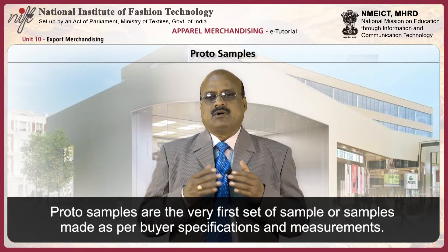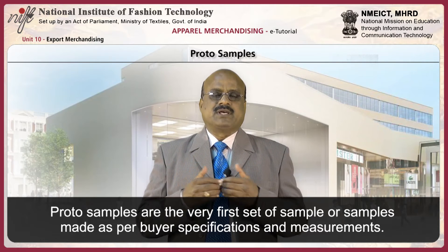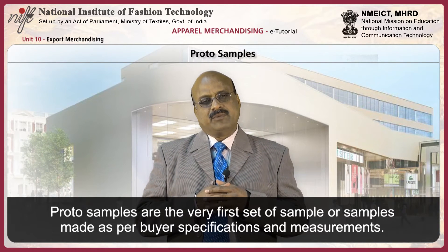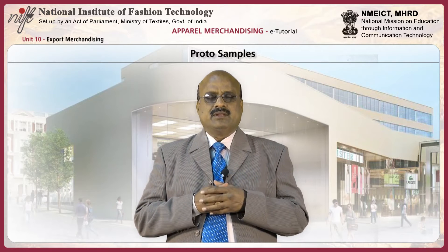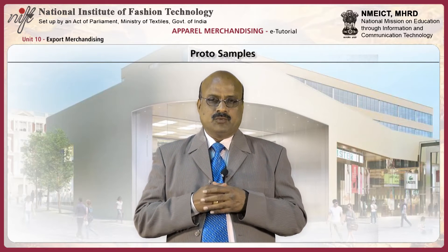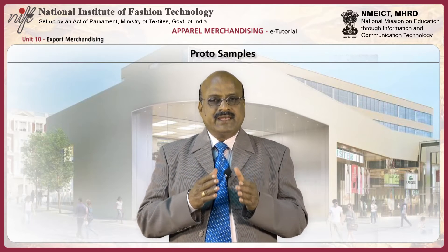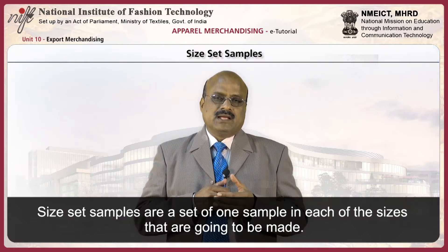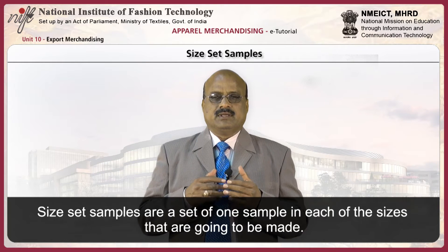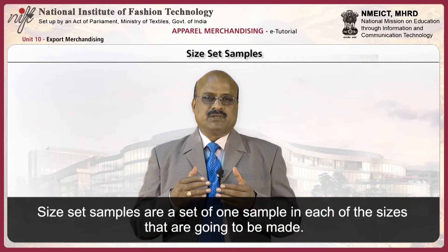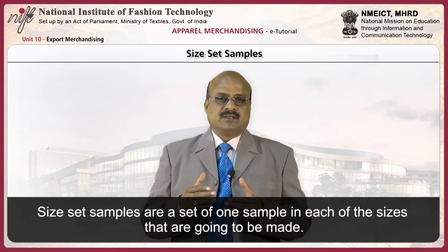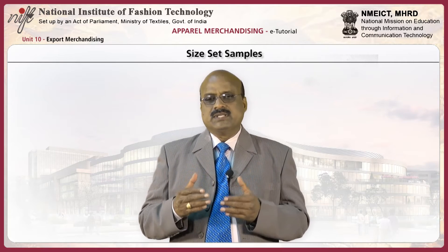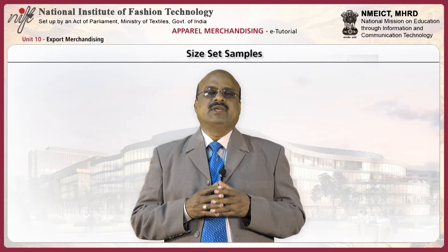Proto samples are the very first set of samples made as per the buyer's specifications and measurements. They are usually made using substitute fabric which is close to the original intended fabric in terms of count, construction, and texture. Size set samples are a set of one sample in each size that is going to be made, generally made from the original fabric using the initial fabric received from the fabric supplier.